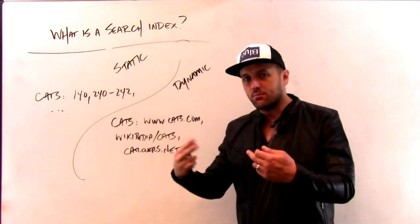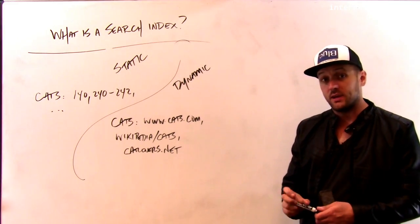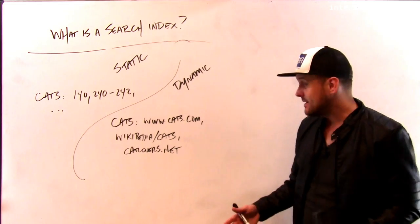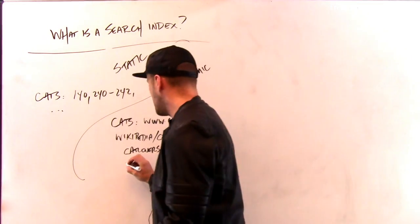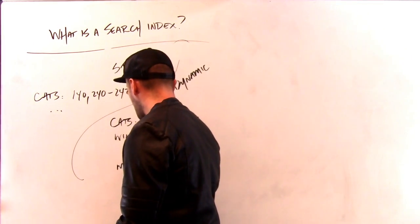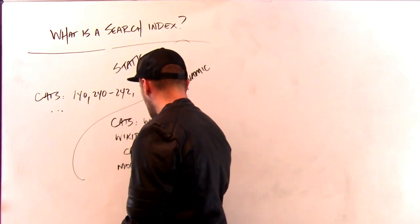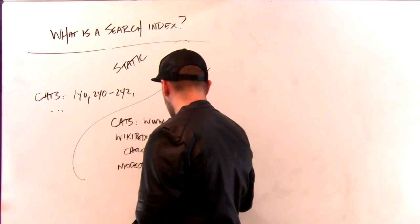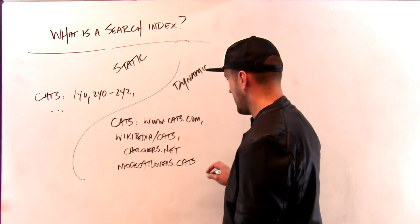So part of the crawling and processing that big search engines are doing is to build these indexes and maintain them. Because it's possible that tomorrow I open up a new site, there were too many cat lovers for catlovers.net. So I'm going to open up morecatlovers.cats, because I can't open up a .cats domain, I hope.